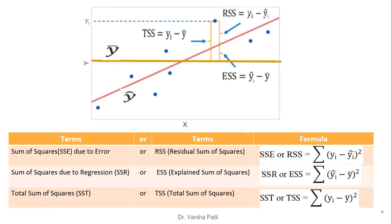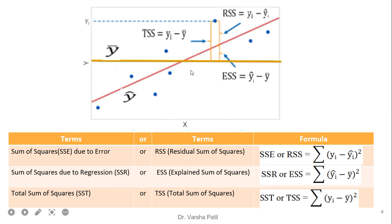The third is total sum of squares. From the total sum of squares, we compare between the actual value and the average value. It is called TSS, which is equal to the difference between the actual value and the average. From the diagram, it is very clear that the total error is nothing but the difference between the actual value and the average.